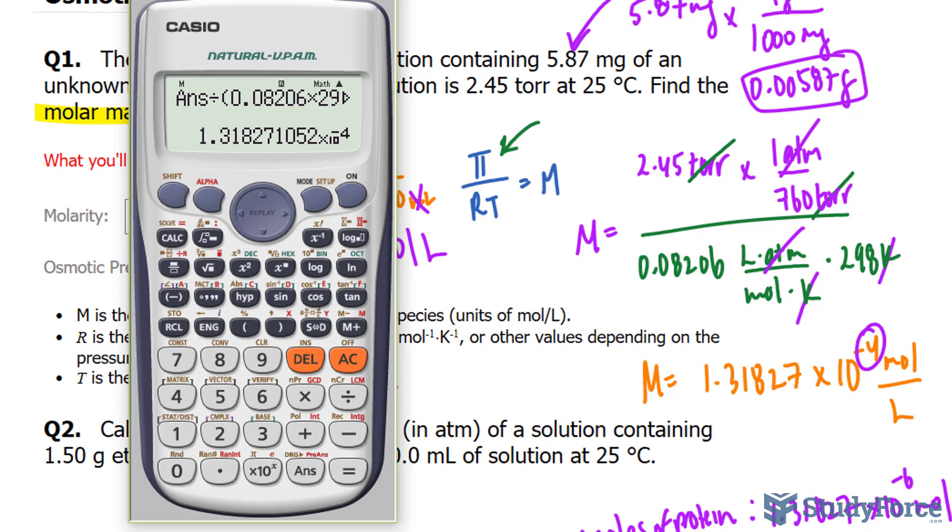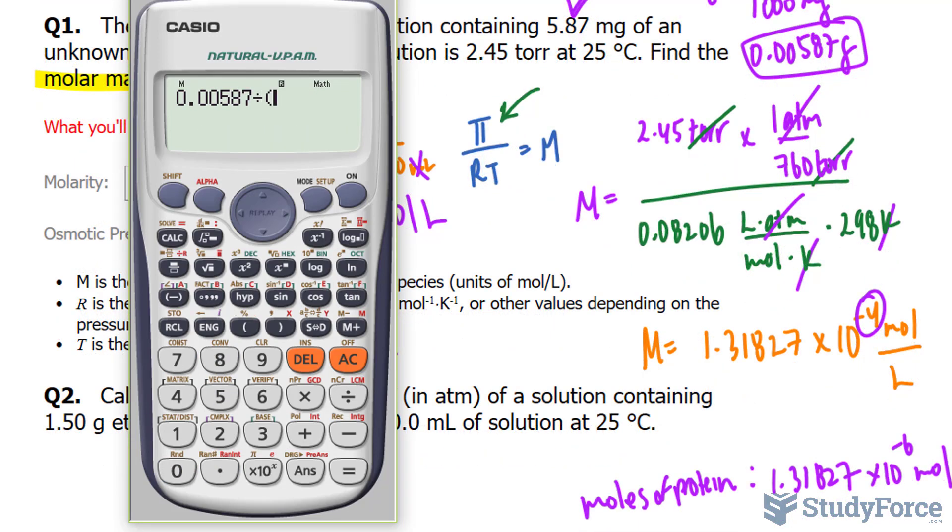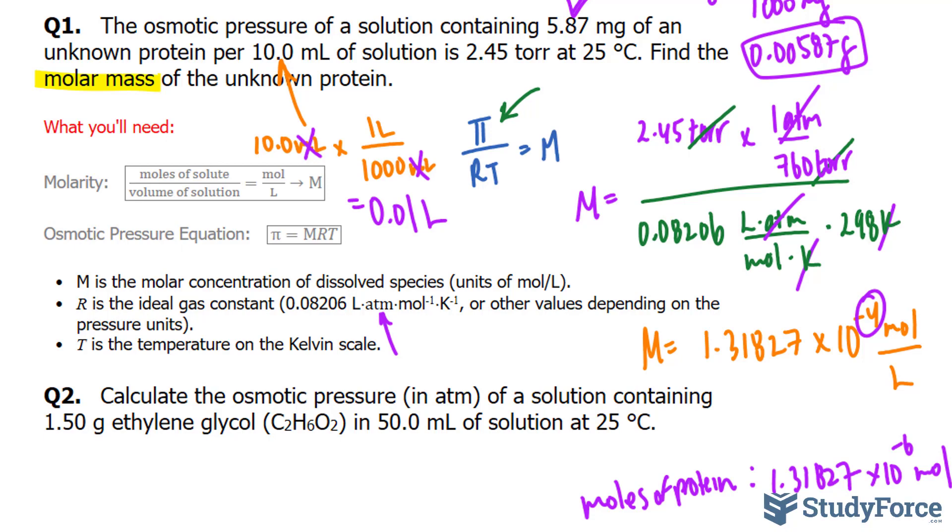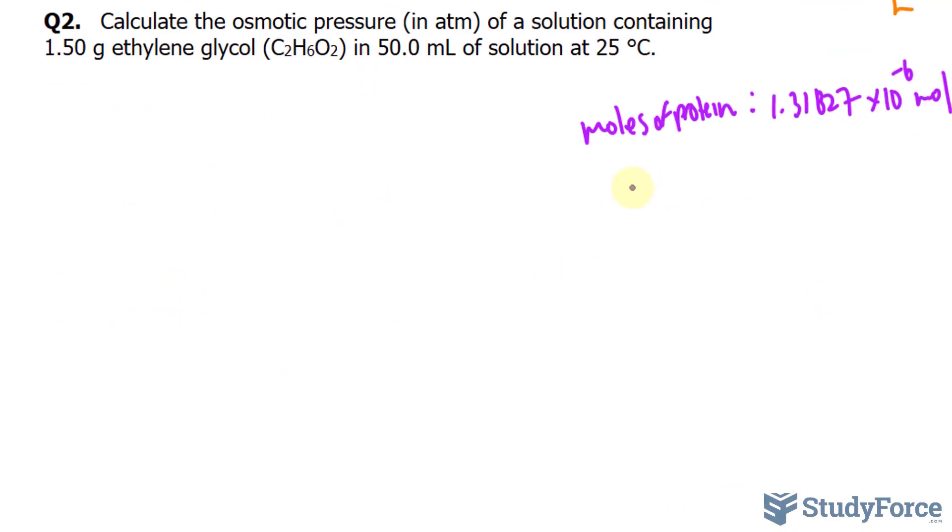So that number again was 0.00587 divided by 1.31827 times 10 to the power of negative 6 gives us 4,452. And we need this to three significant figures, so it's 4.45 times 10 to the power of 3. Let me record that underneath, 4.45 times 10 to the power of 3 grams per mole of this protein.